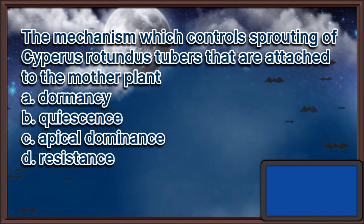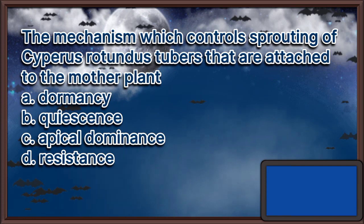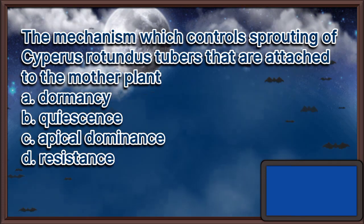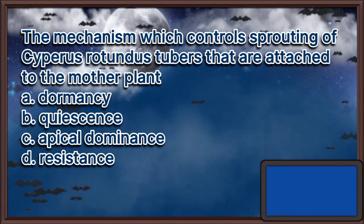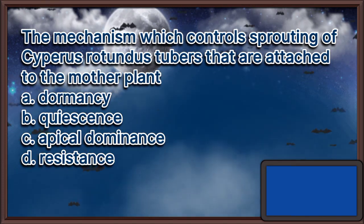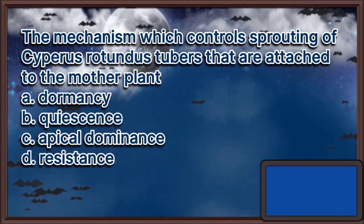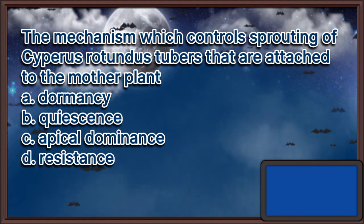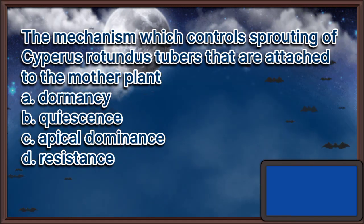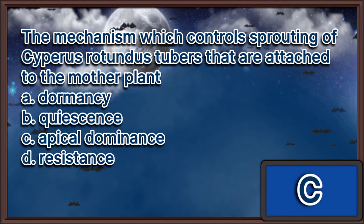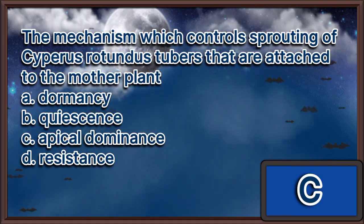The mechanism which controls sprouting of cypress rodentous tubers that are attached to the mother plant. A. Dormancy. B. Quiescence. C. Apical dominance. D. Resistance. The answer is letter C.